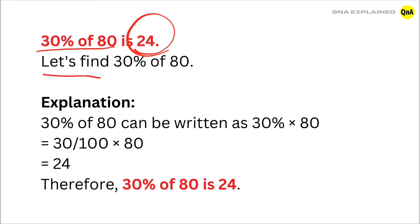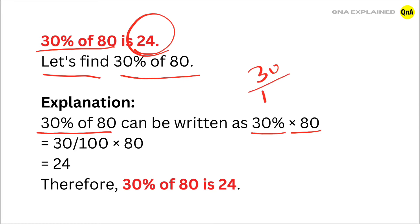Let's find 30% of 80. 30% of 80 can be written as 30% multiplied by 80. 30% can be written as 30 upon 100, so we have 30 upon 100 multiplied by 80.